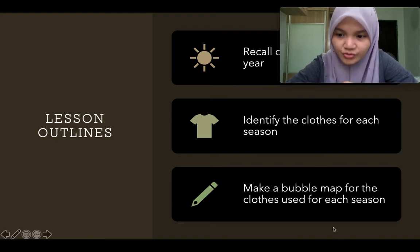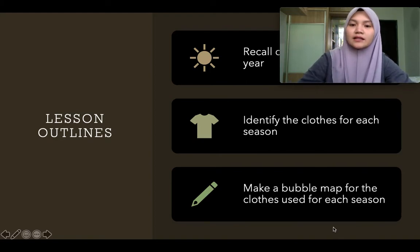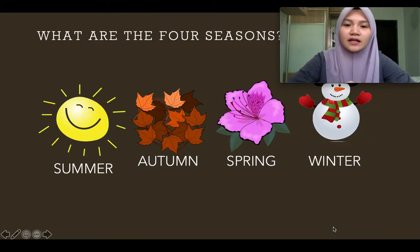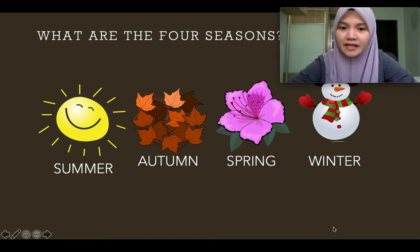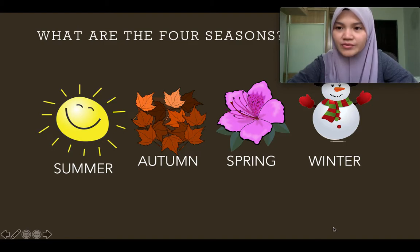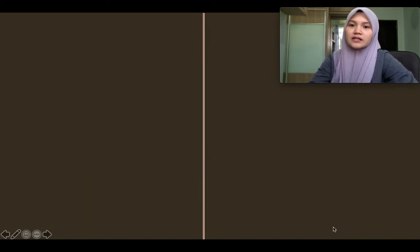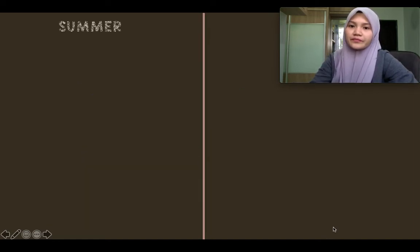There are four seasons. The first one is summer — musim panas. Then autumn — musim luruh. Spring — musim bunga. And also winter — musim salji. So what would you wear during summer? Singlet, sunglasses, sandals, hat, shorts, and skirt.